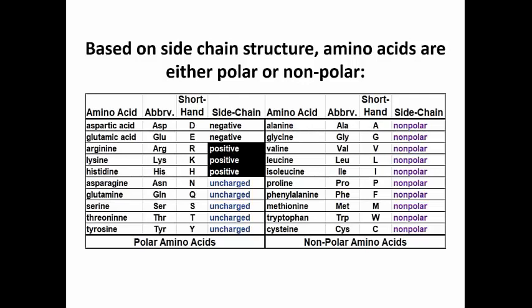Let's look at the monomers that make up polypeptides — the amino acids. Here are the 20 that are used in all living things to make up our polypeptide chains and therefore our proteins.